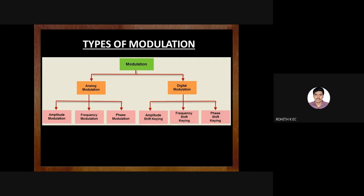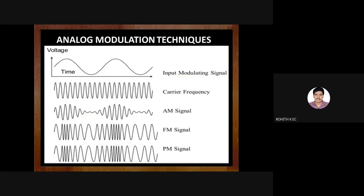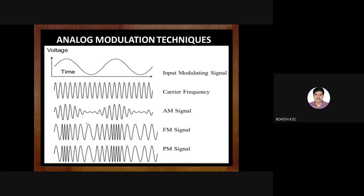Coming to types of modulation: we categorize it into analog and digital. Under analog, the three important modulation techniques are AM, FM, and PM, plus other variants. Under digital modulation we have amplitude shift keying, frequency shift keying, and phase shift keying — ASK, FSK, and PSK. For analog modulation techniques, please pay attention as this is also important for your lab viva.